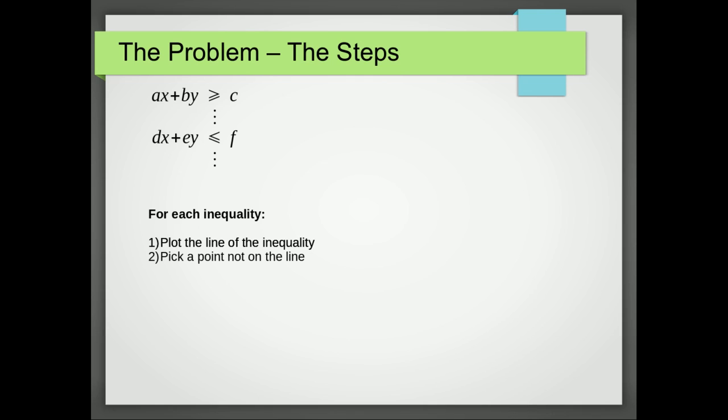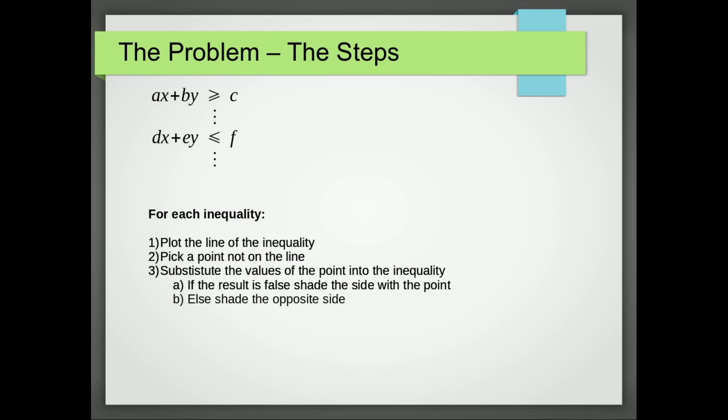We then pick a point not on the line. And if 0, 0 is an option, that's the one we would go for. And then we substitute those values into our inequality. We'll either get a statement that ends up being true or false. If it's false, we shade the side with the point that we picked. And if it's true, we shade the opposite side.